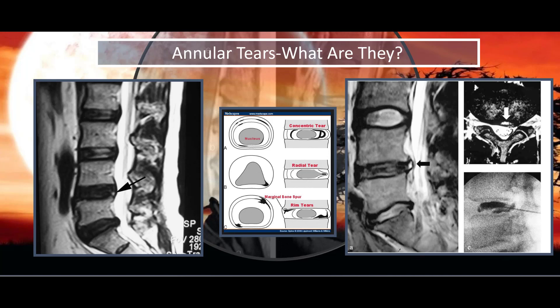Let's look at some annular tears on MRIs. Here where you see my pointer is a side view of the low back, and what you'll notice is a normal disc. You have the bone above, or the vertebral body, similar below, and in between the two you have the disc. That nice bright area indicates hydration of the disc to distribute the pressure.